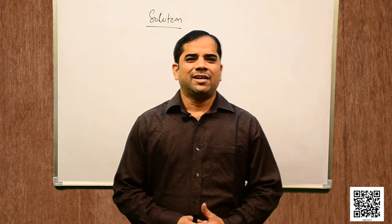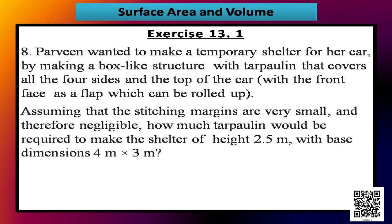Let us now solve question number 8. It says: Parveen wanted to make a temporary shelter for her car by making a box-like structure with tarpaulin that covers all 4 sides and the top of the car, with the front face as a flap which can be rolled up. Assuming that stitching margins are negligible, how much tarpaulin would be required to make the shelter of height 2.5 m with base dimensions 4 m × 3 m?